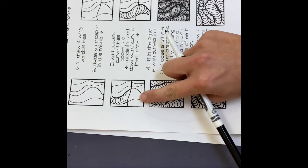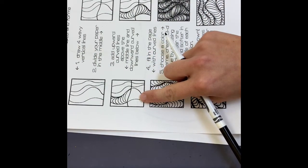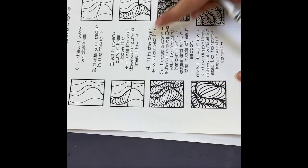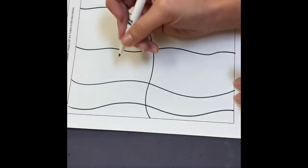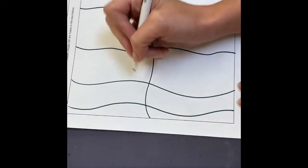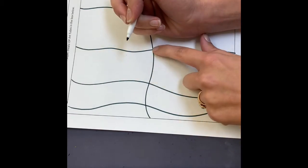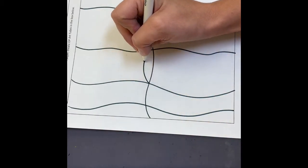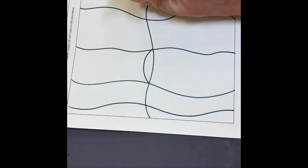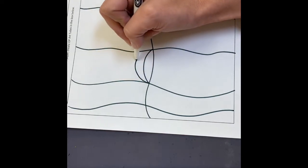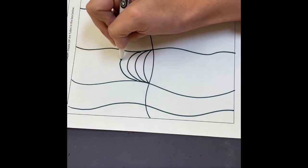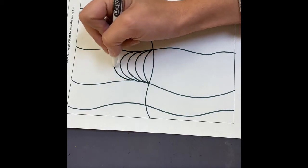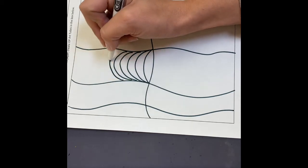Okay, number three: add upward curved lines above the middle line and downward curved lines below. So in any given section, I'll start in this one, I'm gonna go the span of my vertical lines with a curved line and it's gonna curve upward above that line that we drew. So sort of like rainbow shaped lines all the way up.